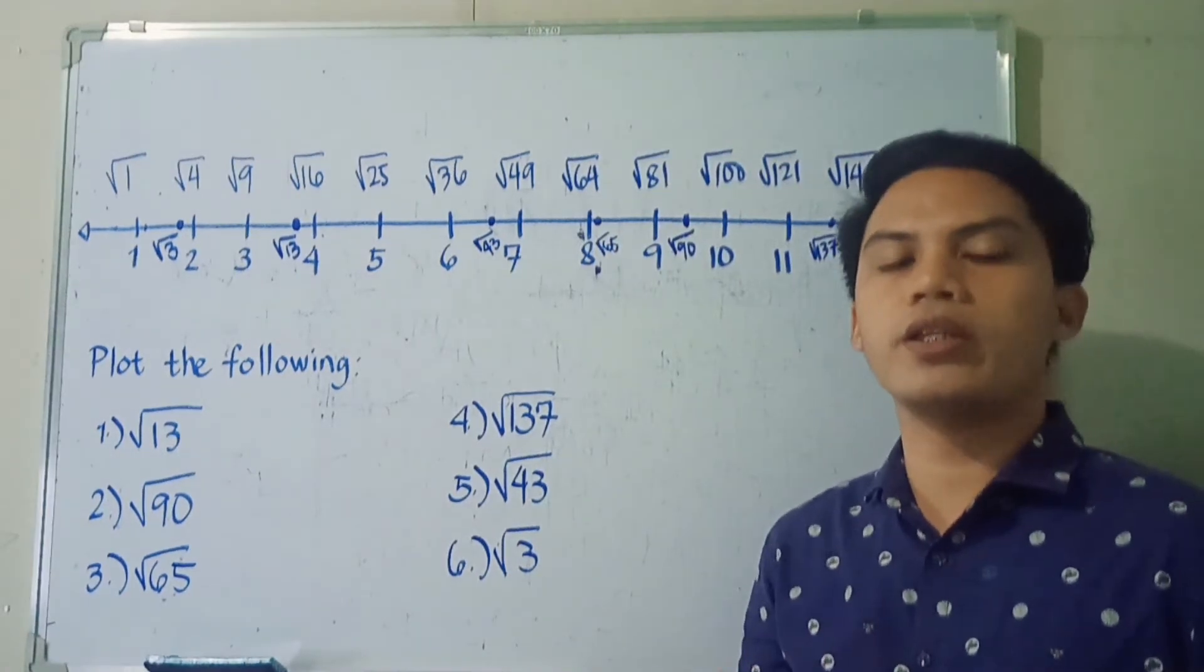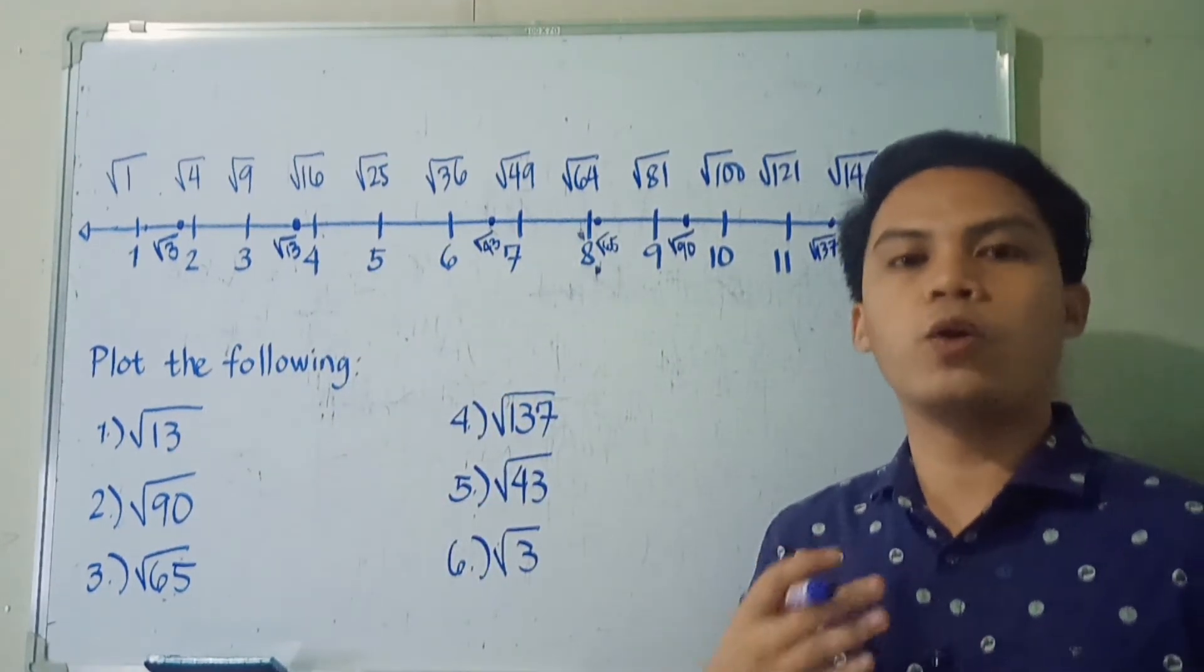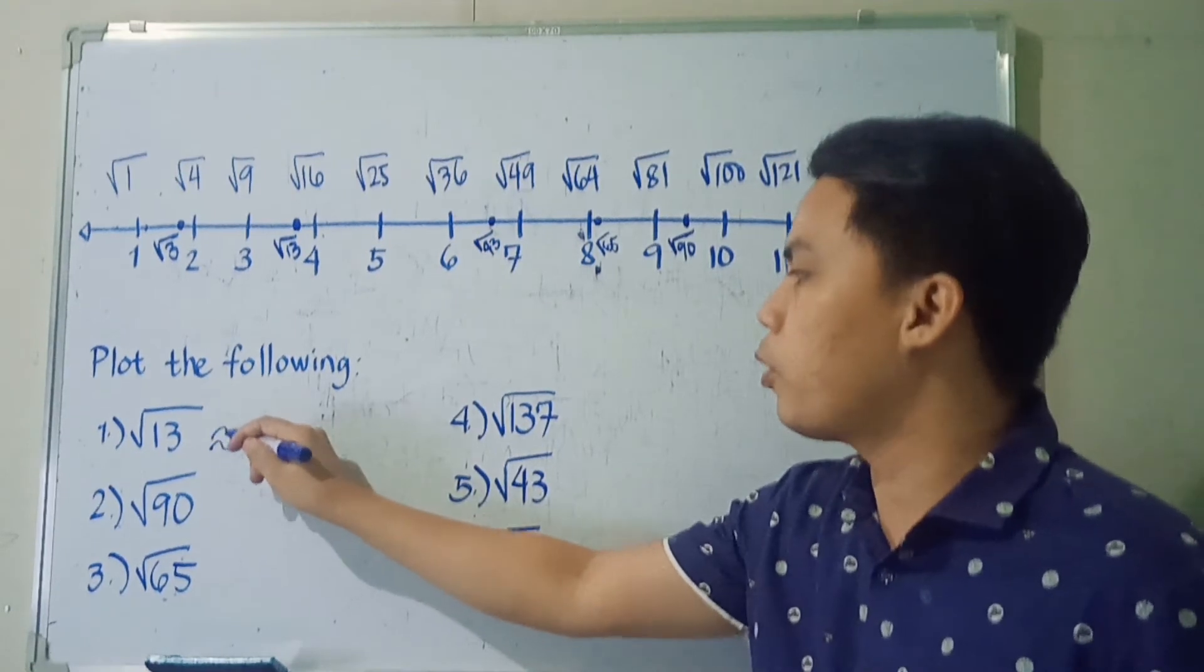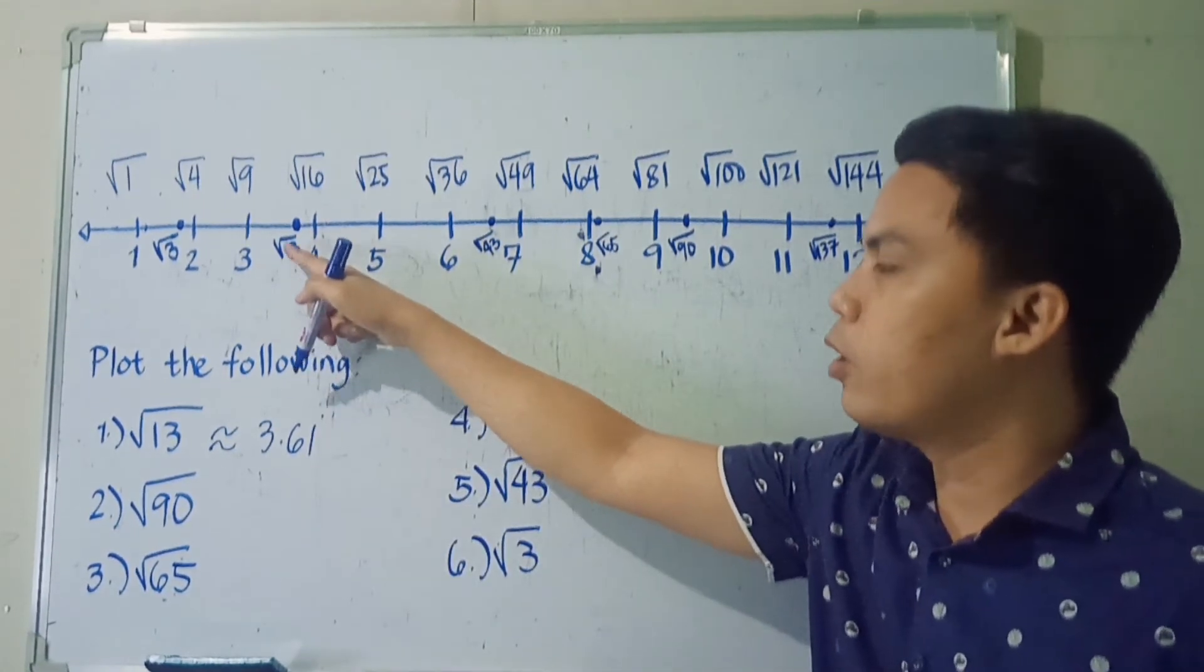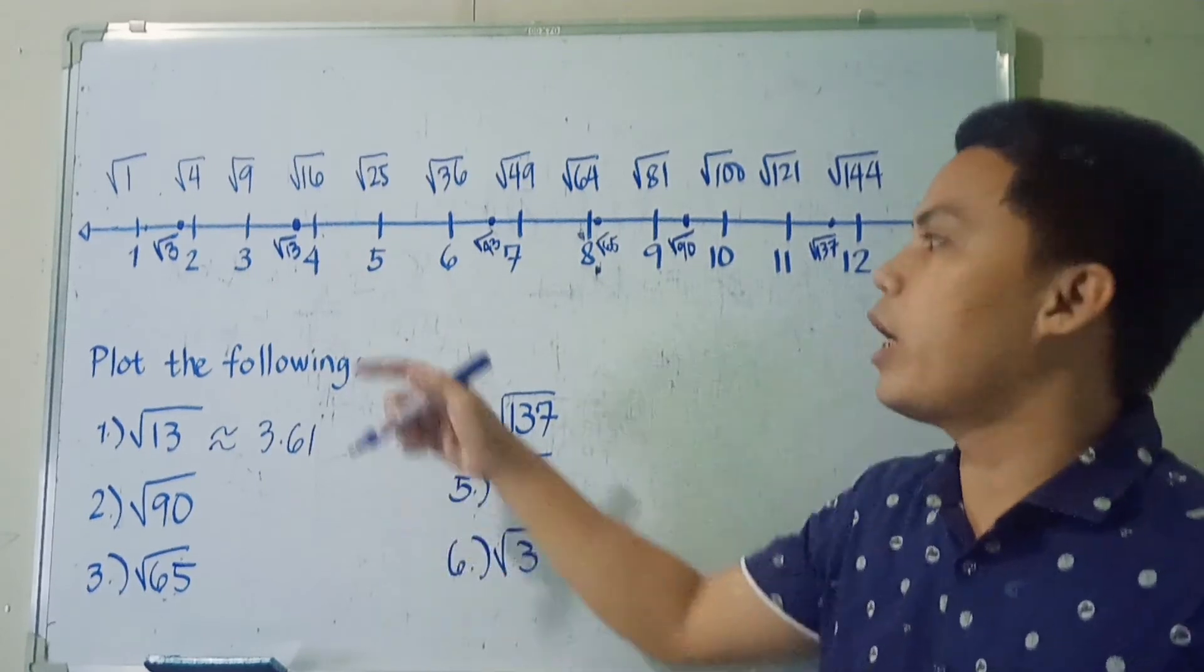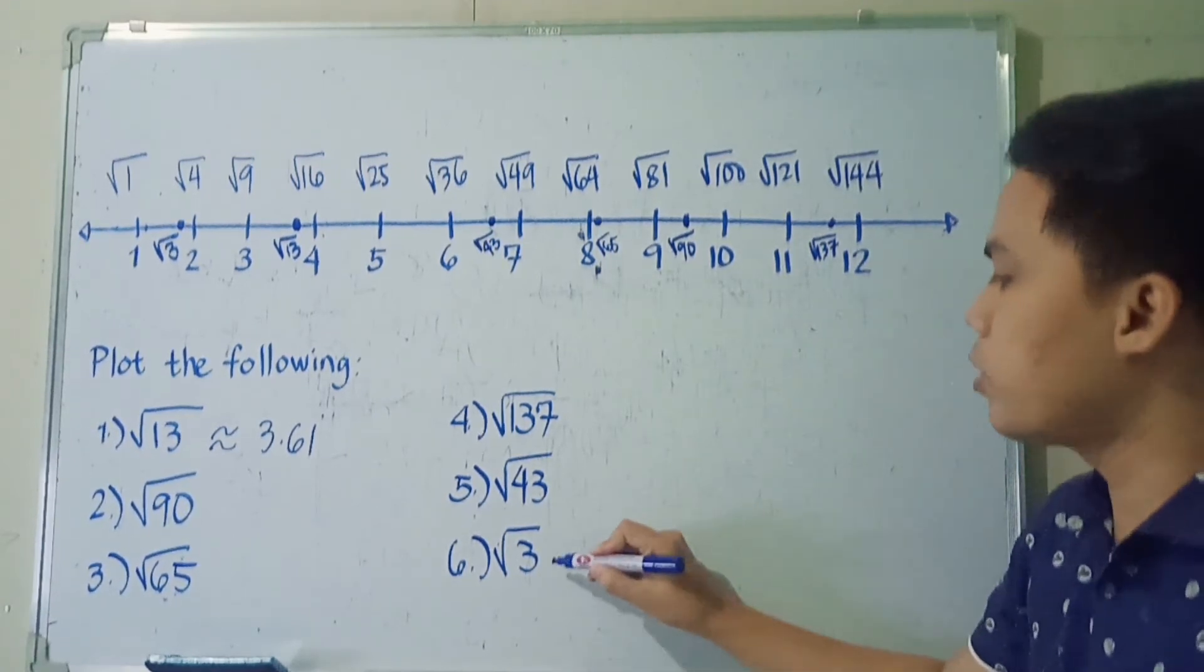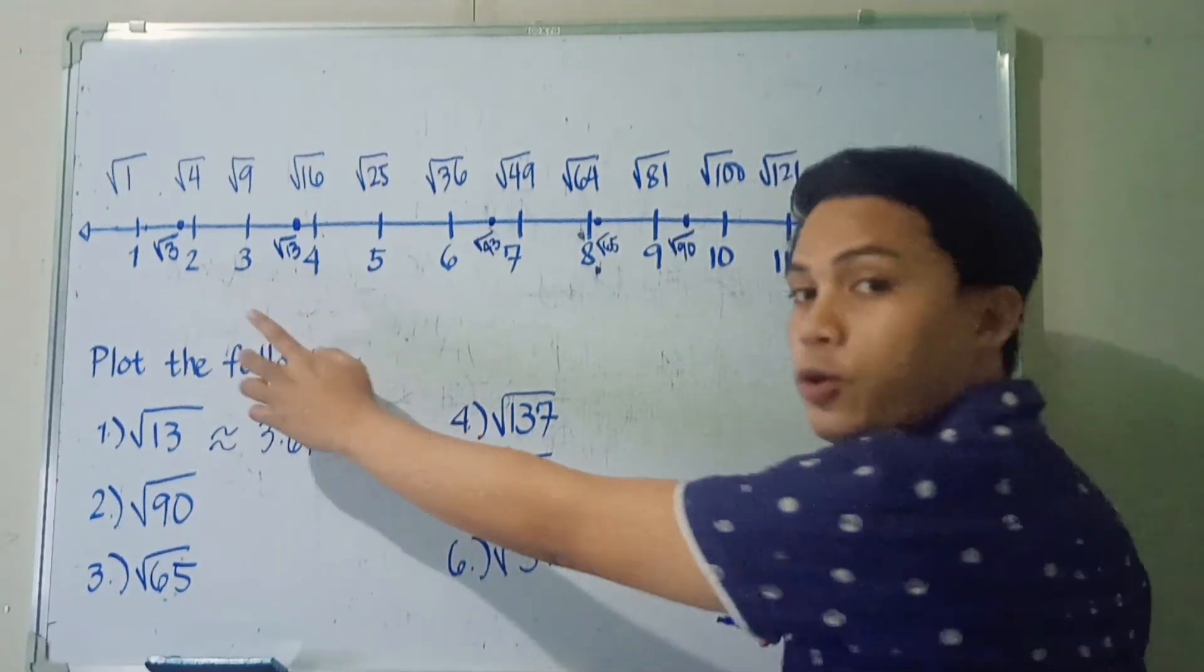Now since this is just an estimation, this is not the exact position of the square roots given, but it's almost close to the correct position. So let's say we have the square root of 13. If we're going to get the value of the square root of 13 up to 2 decimal places, that would be approximately 3.61. If we look at the square root of 13, we placed it here almost midway between 3 and 4. So if we look, our answer is almost correct, or the positioning of square root of 13 on the number line is correct.